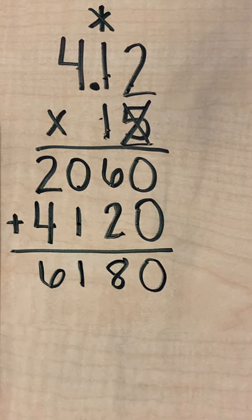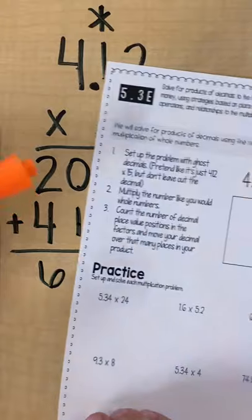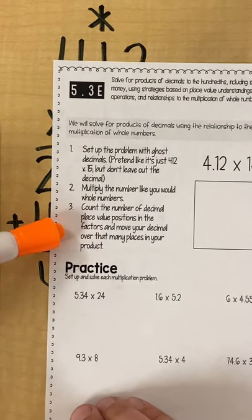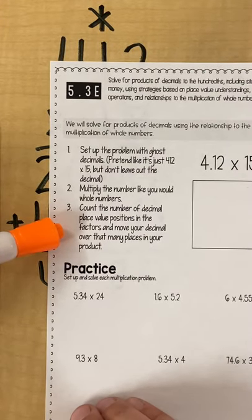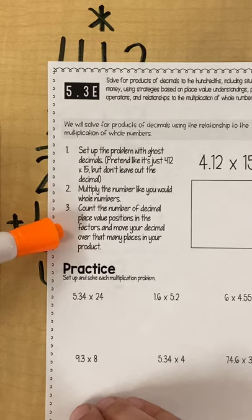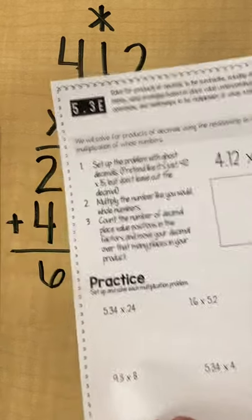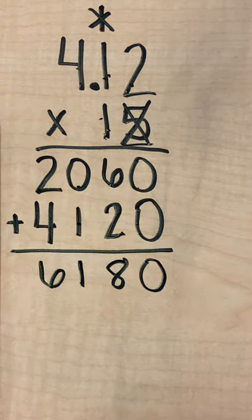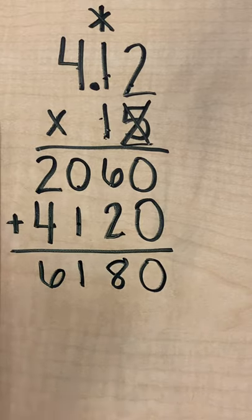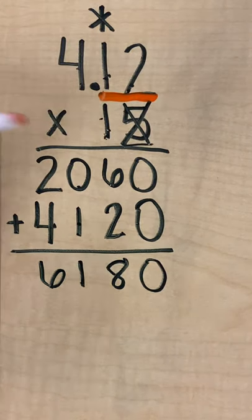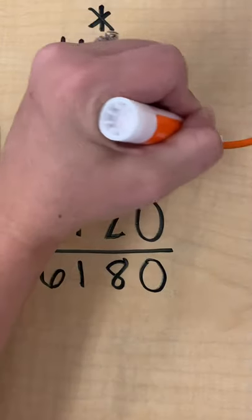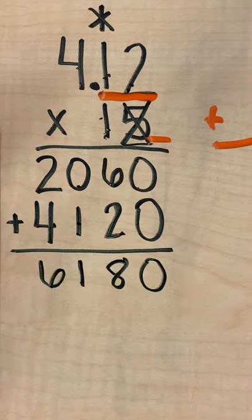Okay, so 6180 is my partial product, or my product for this. However, I'm not done because now I need to count the number of decimal place value positions in the factors and move my decimal in my product that many places. So like we've been practicing on the prior activities, I need to count my top decimals and my bottom decimals and add them up to the side.